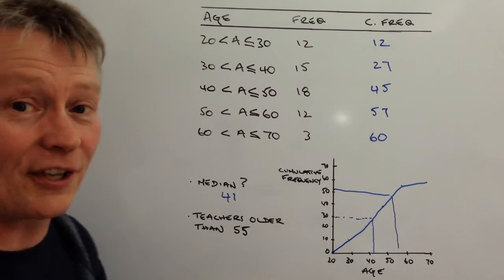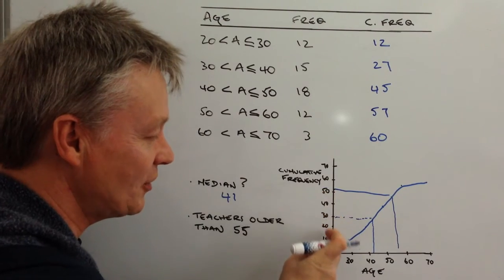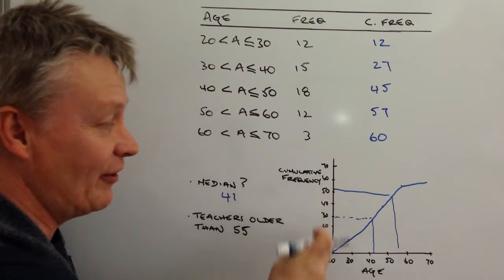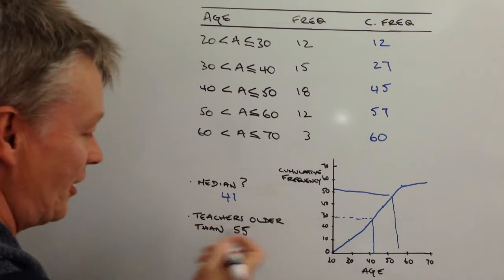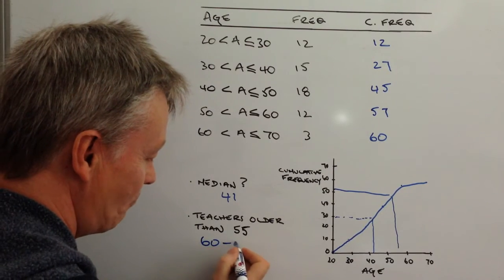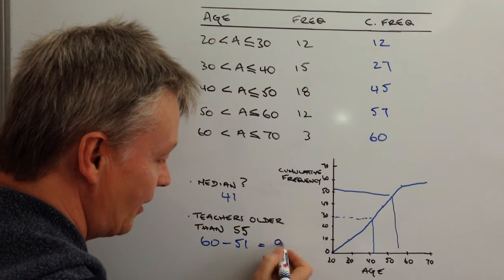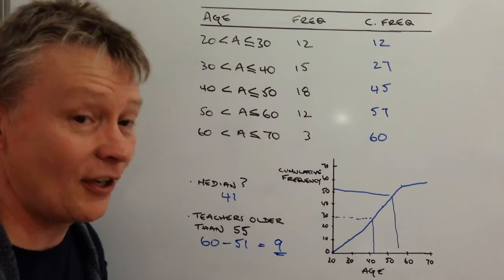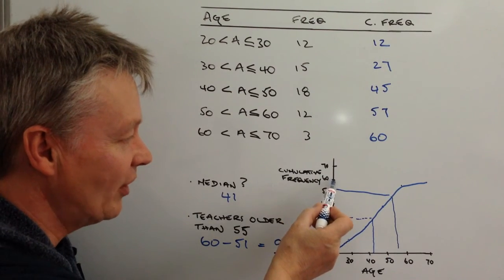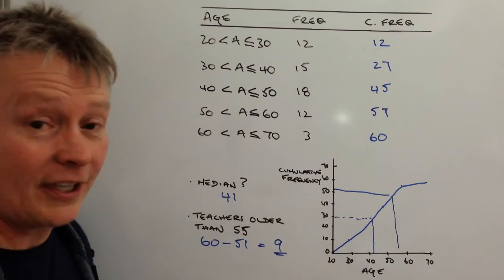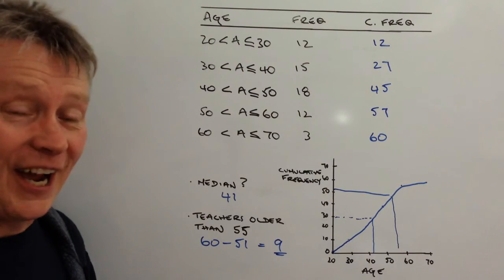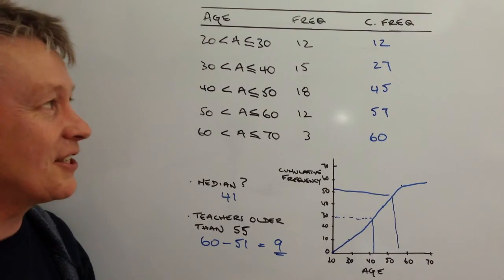So what we're saying is there are 51 teachers who are younger than 55. So 60 in total, so 60 minus 51 is going to give us 9 teachers that are older. So it's this group here at the top, so 9 teachers that are older.